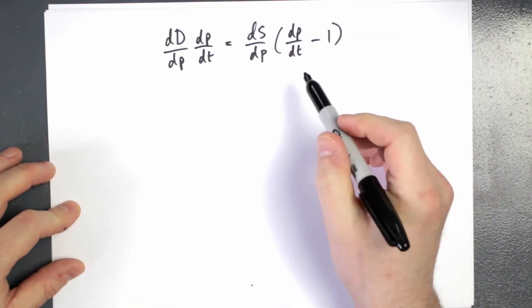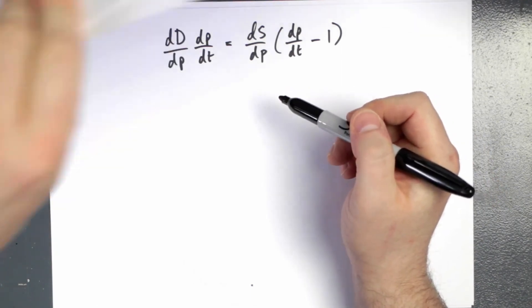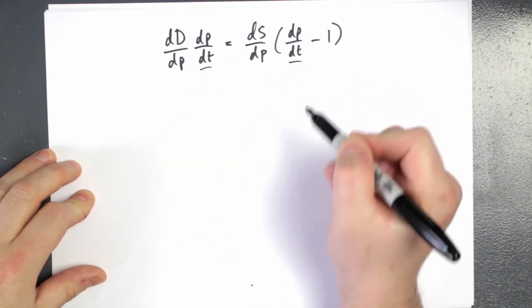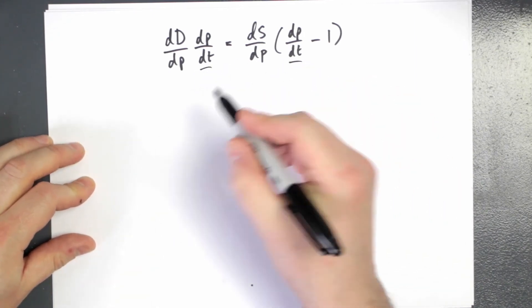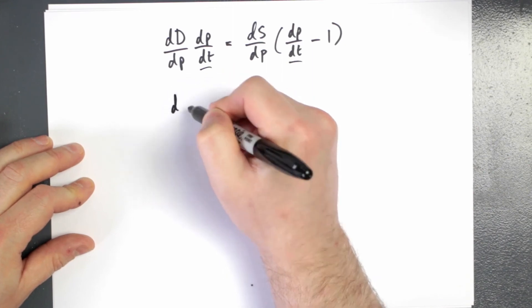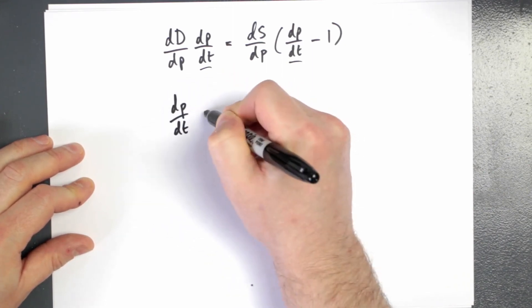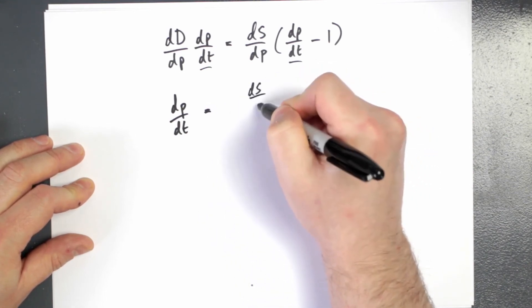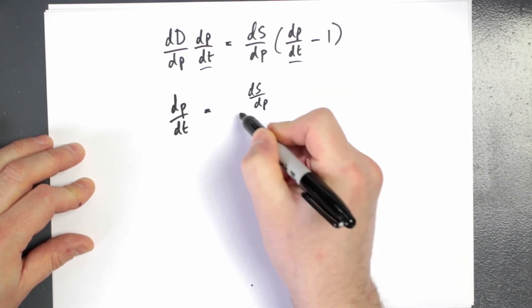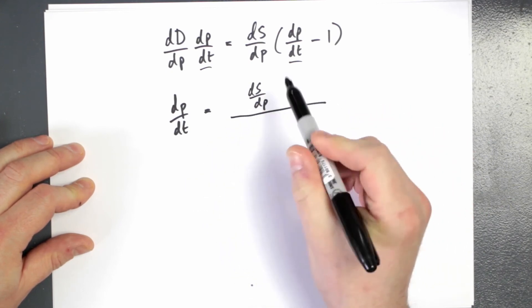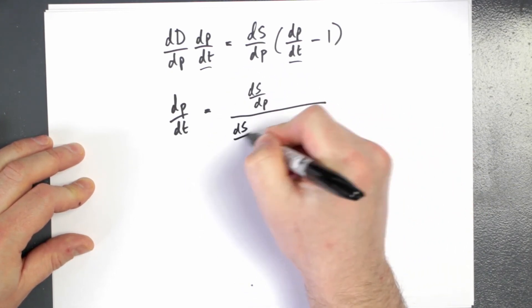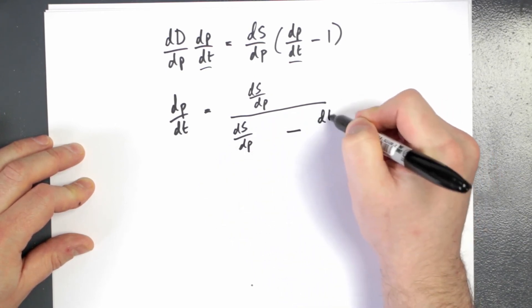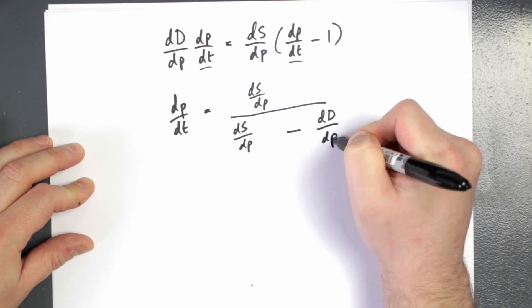Now if we do some rearranging here, we essentially want to get this term by itself. Now I won't go through all the steps, but I encourage you to try it at least once. You'll find that this derivative here is equal to the derivative of supply with respect to price divided by the derivative of supply with respect to price minus the derivative of demand with respect to price. So now we've isolated this term, which is precisely what we were hoping to do.